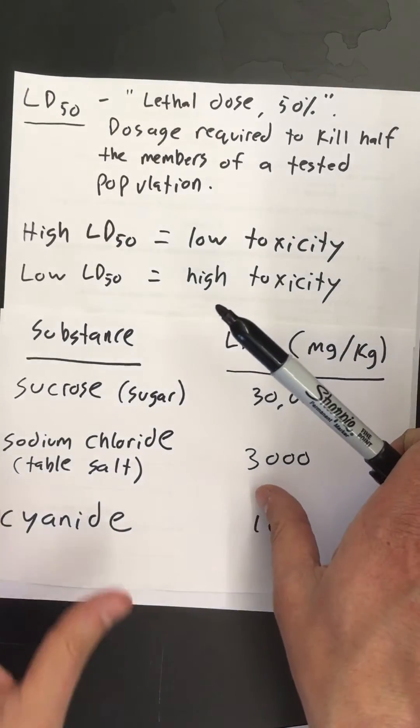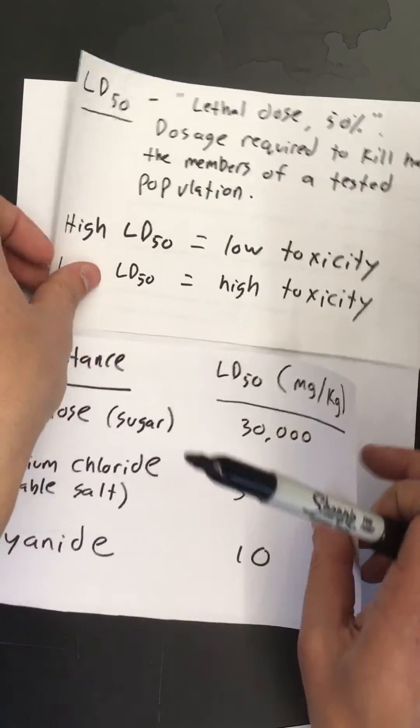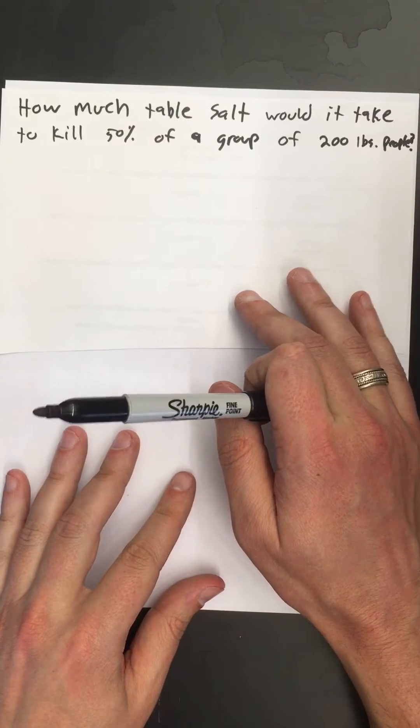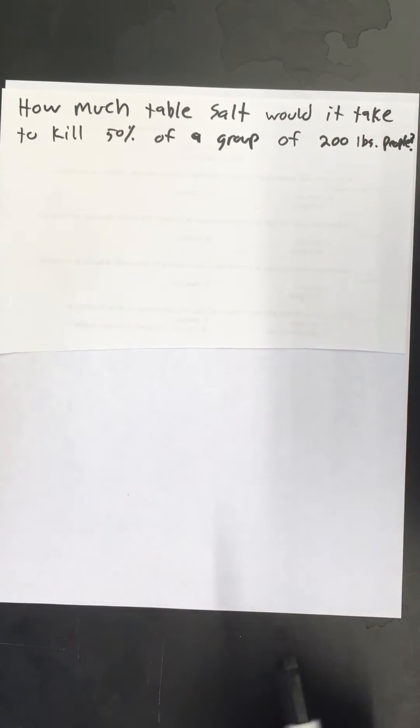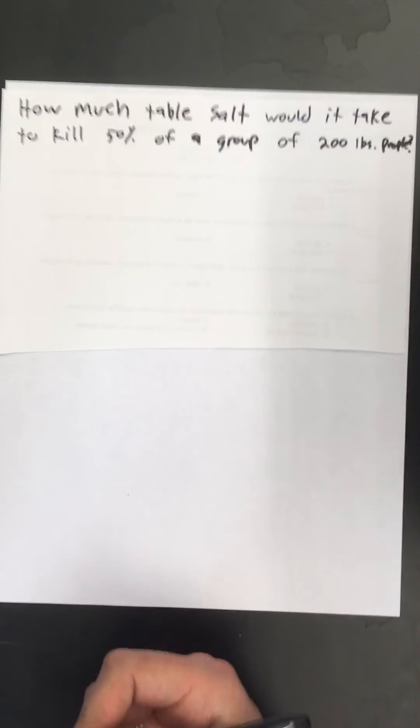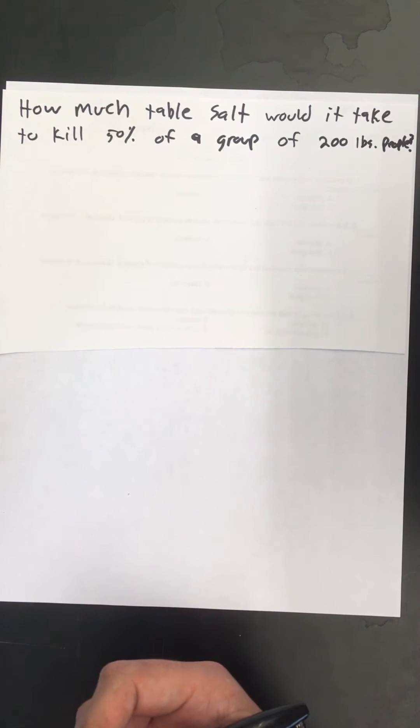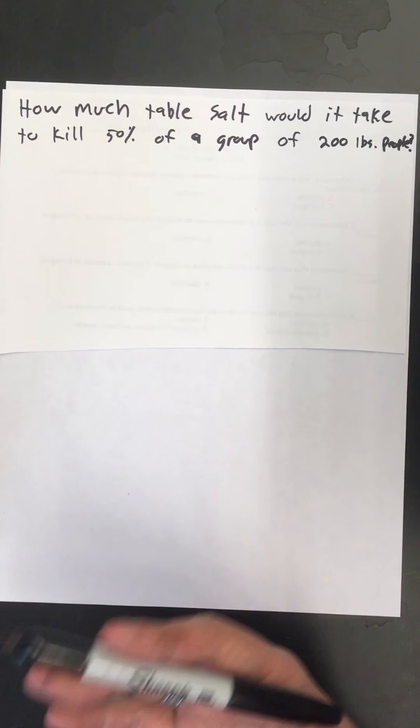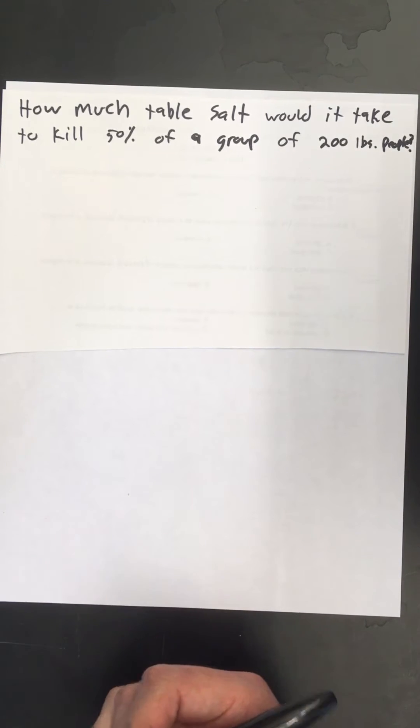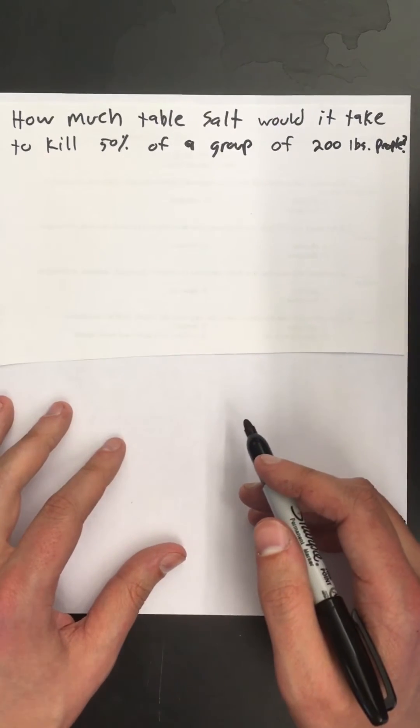Let's show you how to do a calculation here. This problem is asking us how much table salt would it take to kill 50% of a group of 200 pound people, and I picked this because that's about what I weigh. If we want to figure out how much table salt it would take to kill 50% of people that weigh as much as me, we've got to go through a couple steps. I'm going to show you the mathematics of how to do this.